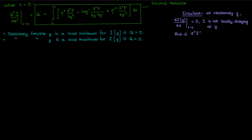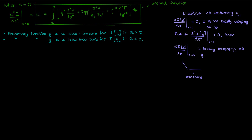However, if the second derivative is positive, that means the derivative di/dε is locally increasing at y. So we went from a negative derivative — a decreasing functional — to a zero derivative at y, to a positive derivative creating an increasing functional. This looks like a local minimum. So a positive second variation corresponds to a local minimum. The exact same logic can be used to relate negative second variations to local maxima.